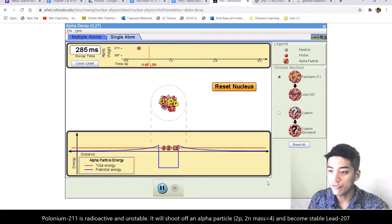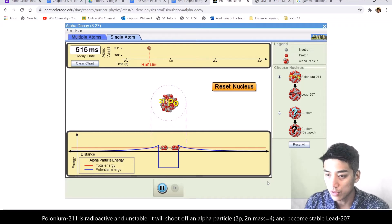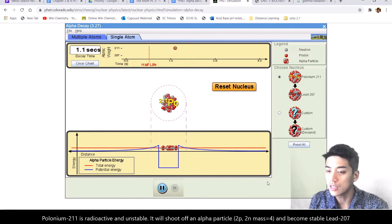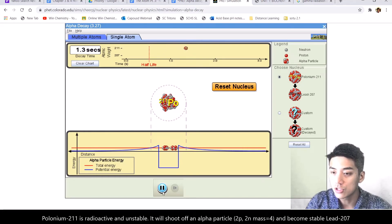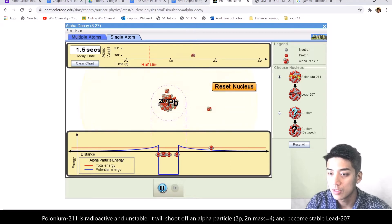Let me just illustrate to you what alpha decay looks like. We're looking at a polonium-211 nucleus. And this nucleus is unstable. So, at any moment now, it should shoot off an alpha particle. And there it goes.